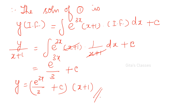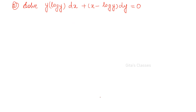So y/(x+1) equals e^(3x)/3 + c. Multiplying throughout by (x+1), the solution is y equals e^(3x)/3·(x+1) + c(x+1). This is the solution. Note: the same problem can be solved by different methods — if just 'solve' is given, you can use any method as per your convenience.